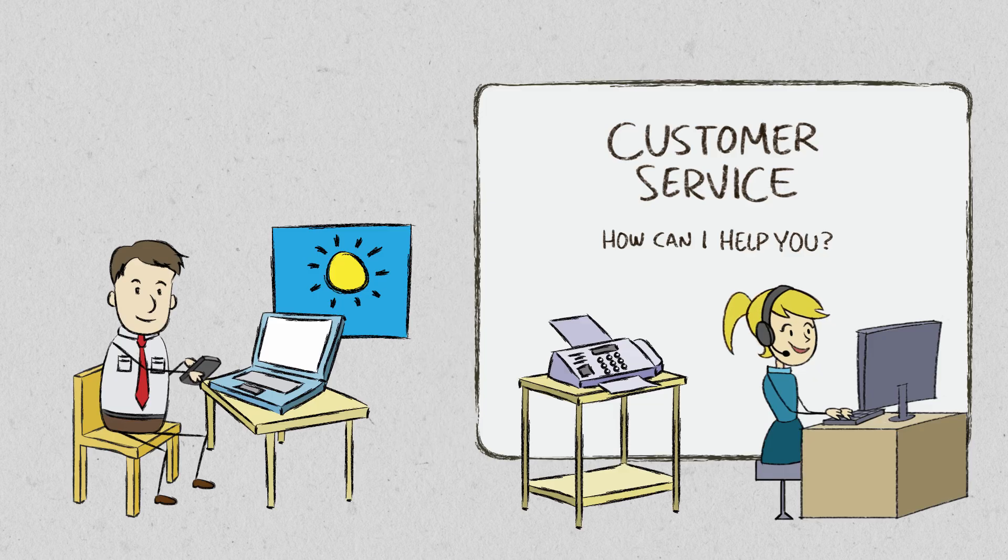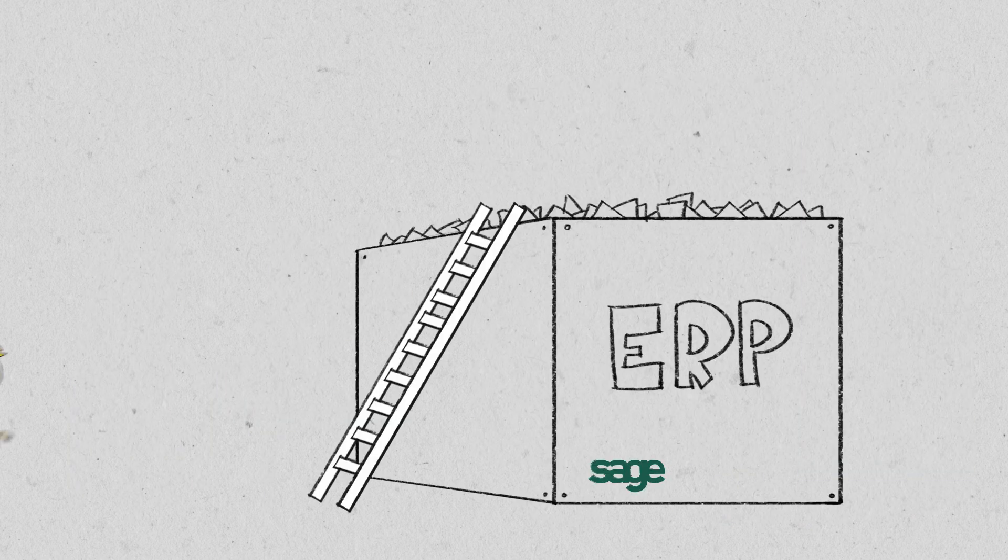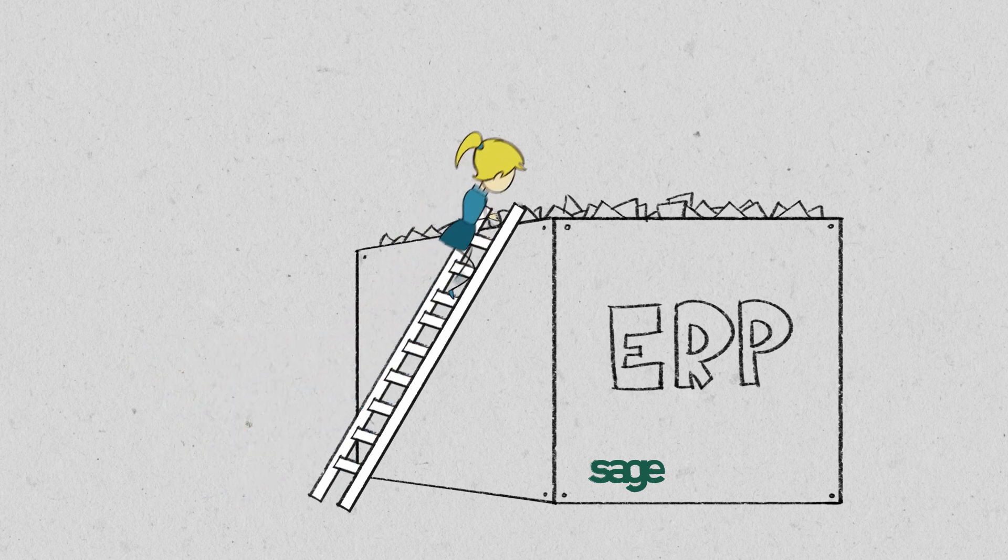So why can't your company do things that way? Why is it that any time your customers need anything, they have to get on the phone or send an email or a fax, then wait for a service rep? It's because the data that runs your company is locked away in your ERP software.